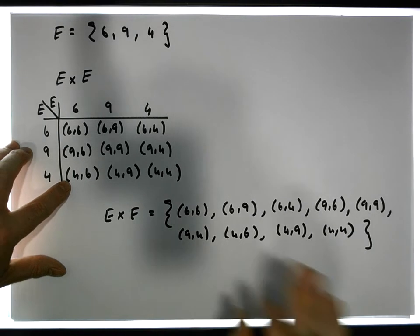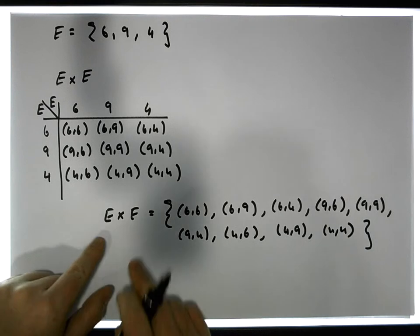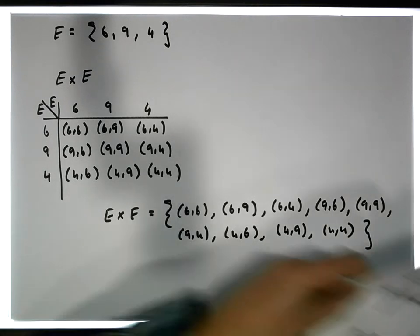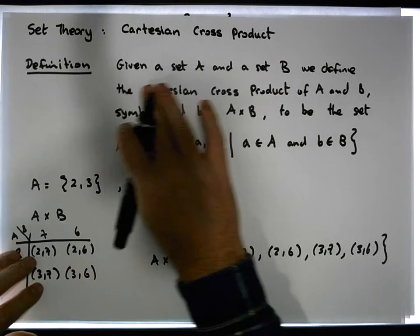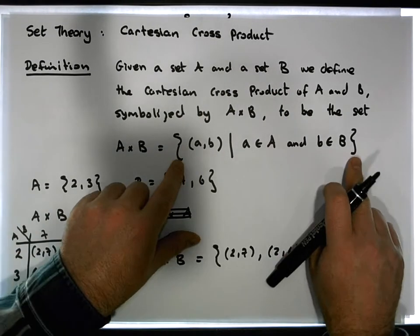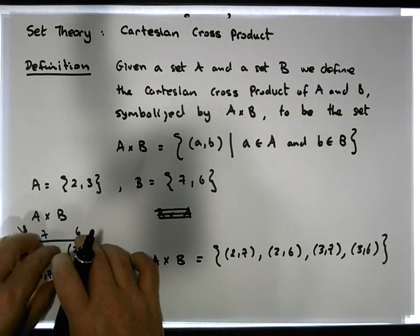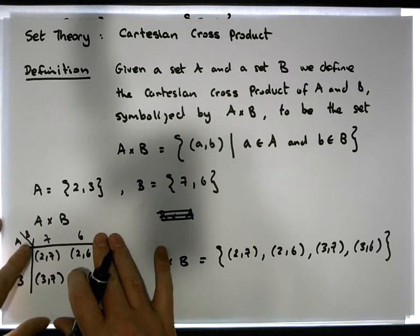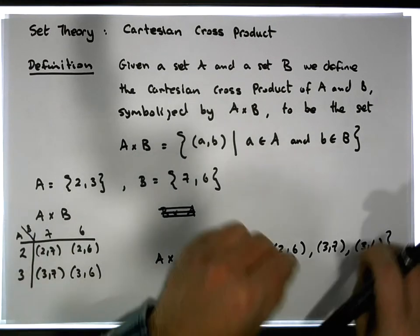This is actually really important that you take the elements out of here and you put them into this particular set because the cross product, by definition, and that's the way we defined it, we defined the cross product of A and B to be a set of ordered pairs. So it's important that we take the elements from this particular tool that we've used to construct these ordered pairs, that we take the elements and we put them into a particular set.